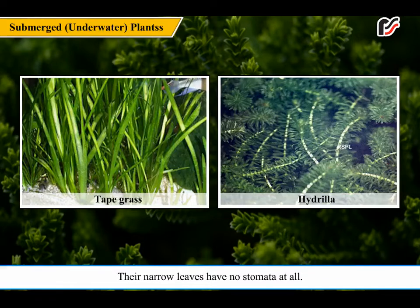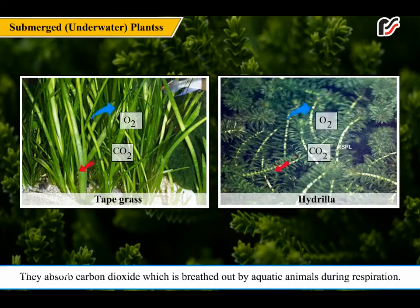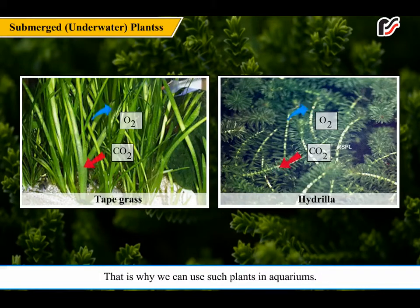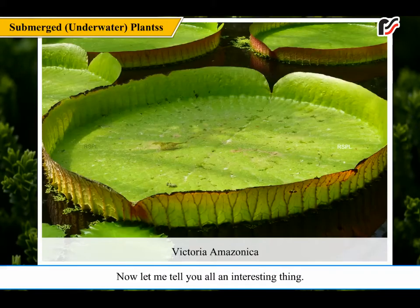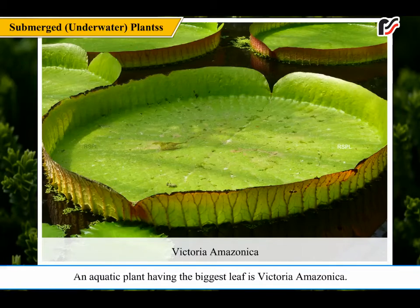Submerged plants grow below the water surface. Their narrow leaves have no stomata at all, and they breathe through their body surface. They absorb carbon dioxide which is breathed out by aquatic animals during respiration. That is why we can use such plants in aquariums. An aquatic plant having the biggest leaf is Victoria Amazonica.